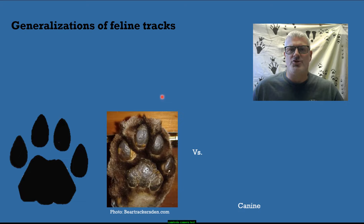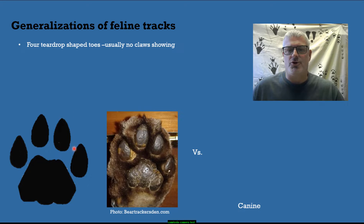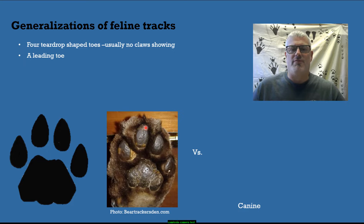First, I want to look at the general characteristics of feline tracks. They have four teardrop-shaped toes, usually with no claws showing — though claws can show under certain circumstances. Felines also have a leading toe, meaning one toe is further forward from the two center toes, and you can see that in both of these pictures.